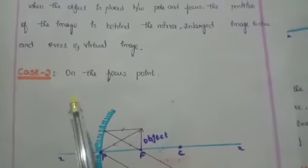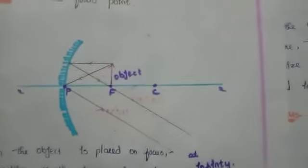In the second case, the object is on the focus point. See here, it is the ray diagram of concave mirror case 2. We can tell it is a concave mirror because the lines are curved from outside. When the object is placed at focus, the ray will be parallel to the principal axis and pass through the focus, and another ray passes through the pole and comes back obliquely. Here the image will form at infinity, so we can't find the image size. When the object is placed on focus, the position of image is at infinity and we can't find the image size.